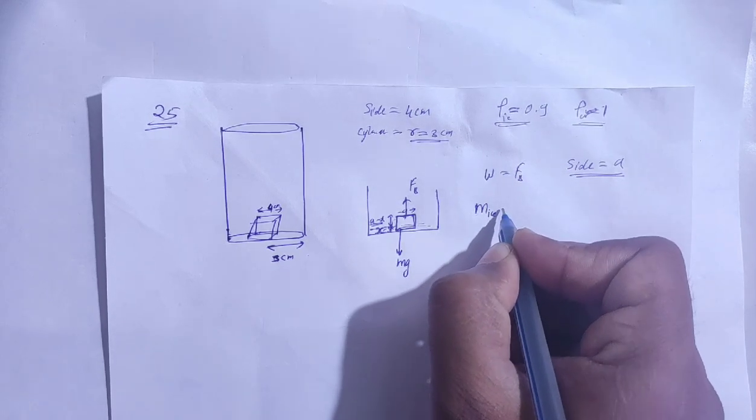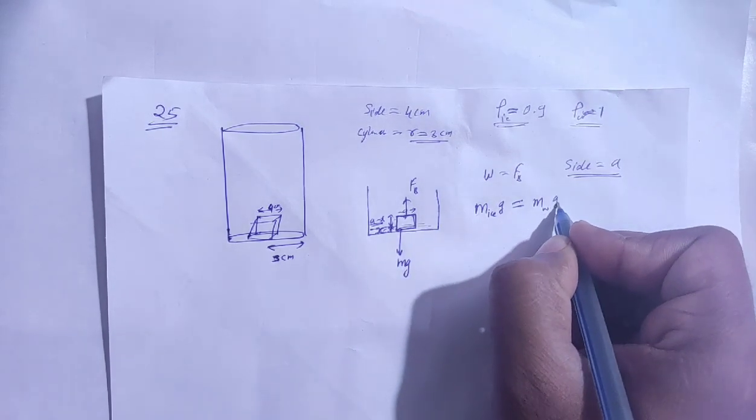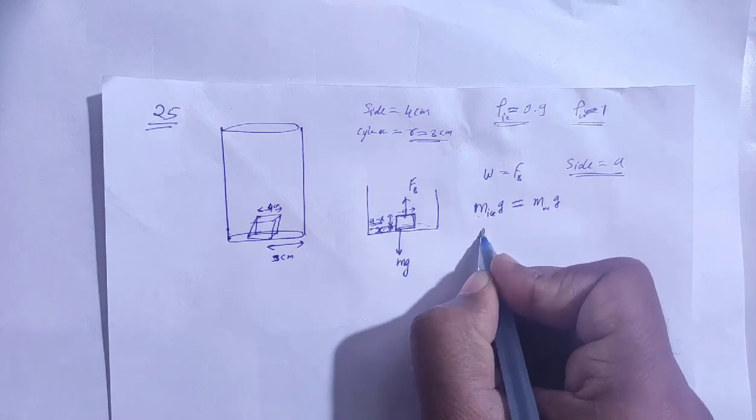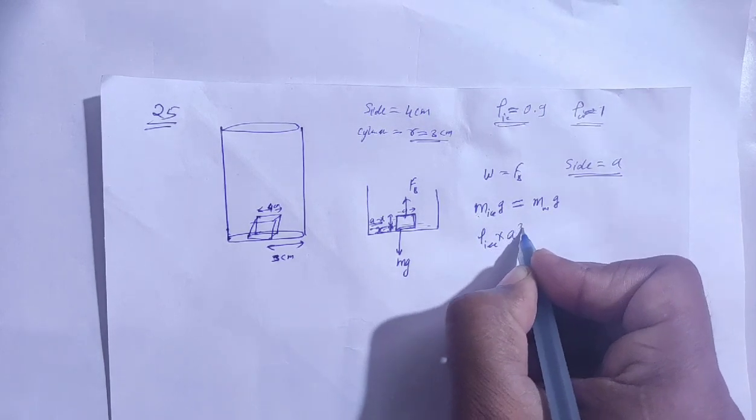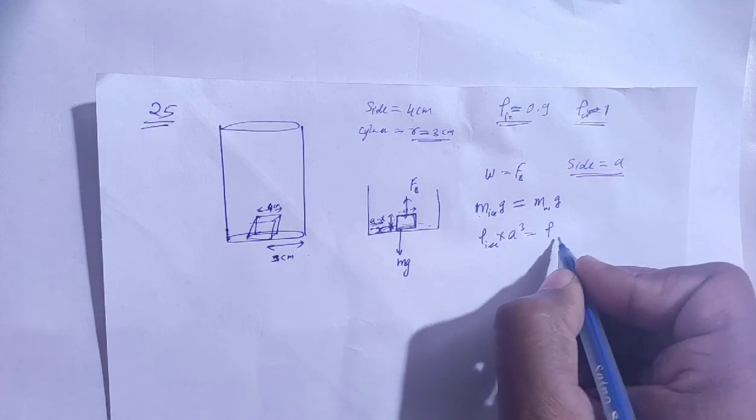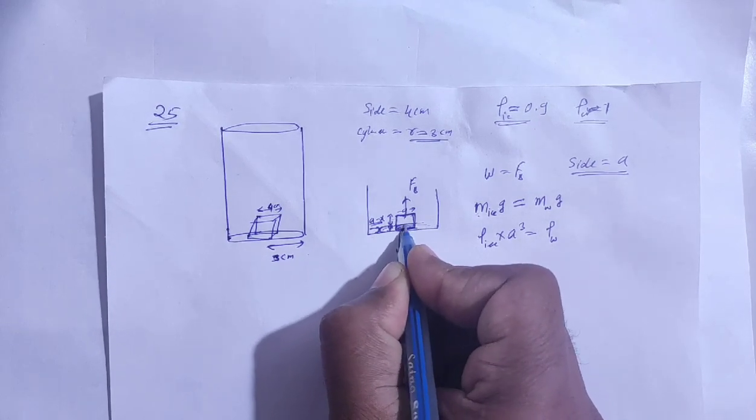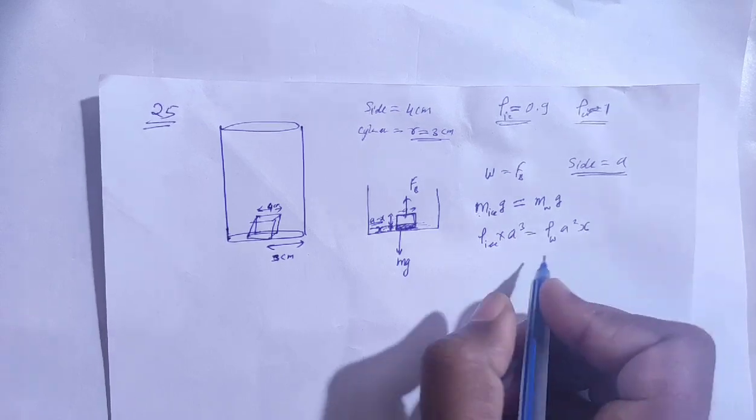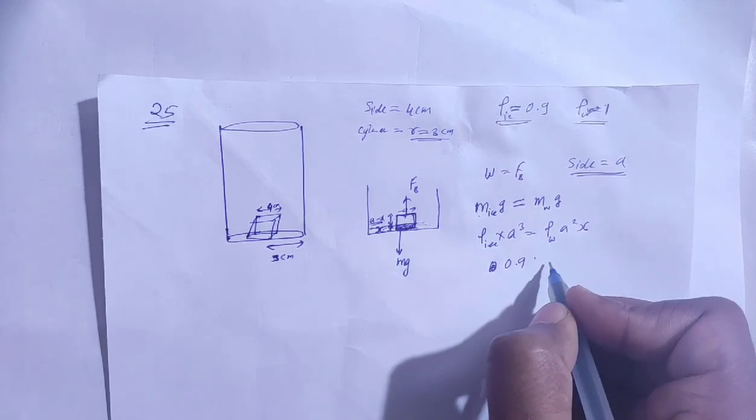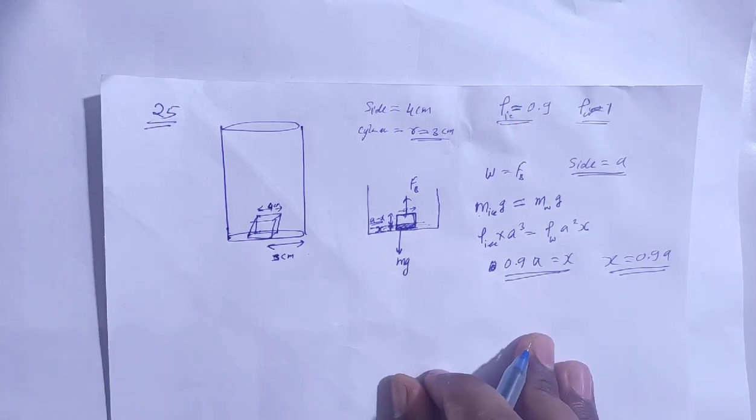Mass of ice into g, and buoyant force is water displaced mass into g. Okay, g cancels out. Ice density into volume, density of ice times volume a cubed. Here, the water displaced, so density of water times volume displaced a squared into x. So density 0.9, and a squared cancels out, so x is equal to 0.9a.